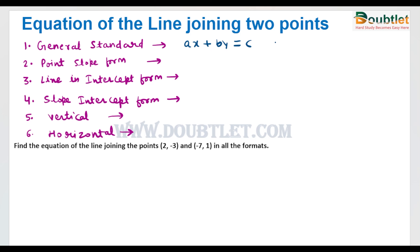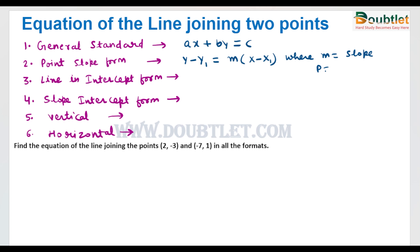Another form of a line is the point-slope form. In this form, a point through which the line passes is given along with the slope of the line. We can write this equation as y minus y1 equals m multiplied by x minus x1, where m is the slope of the line and the point P through which the line passes is (x1, y1).